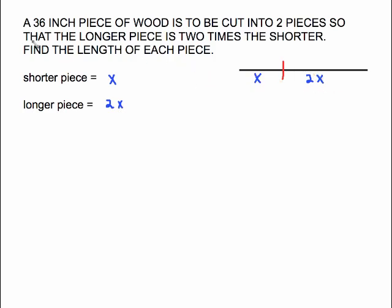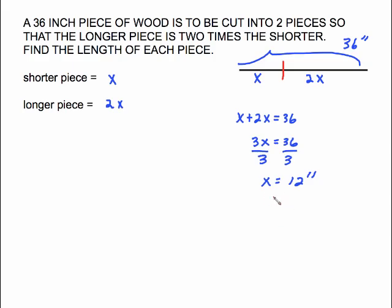We know one more piece of information. We know that the whole piece of wood is 36 inches. So that's shown here. That helps me get my equation. If the two pieces go together to make 36 that's my equation. x plus 2x equals 36. Pretty simple to solve. Combine your like terms. It's 3x equals 36.